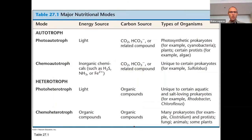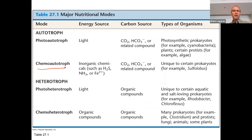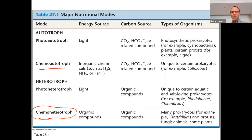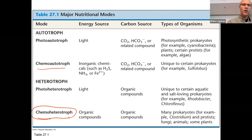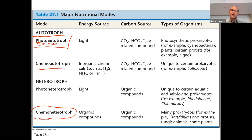Looking at the troph terminology: chemo-heterotrophs include things like E. coli, fungi, and animals — we all eat things. Some bacteria are photo-autotrophs, which also includes plants and algae. Photo means light and auto means self, so they are self-feeding and getting energy from light — they're photosynthetic. But notice bacteria also have other categories: chemo-autotrophs and photo-heterotrophs — they can do some weird things.